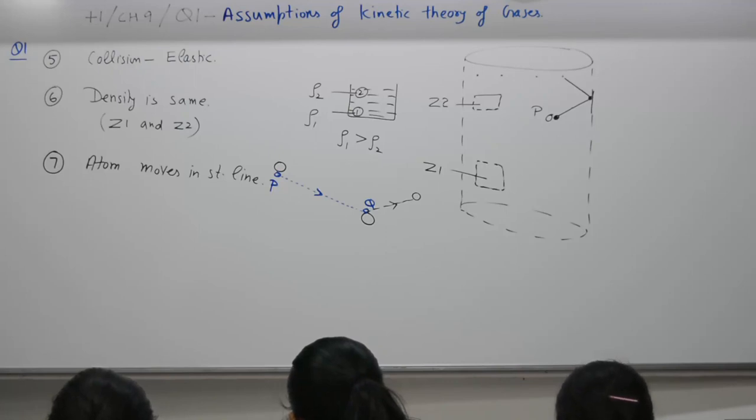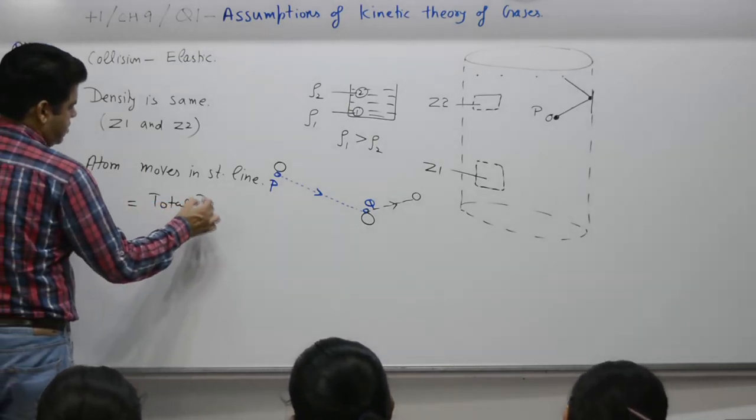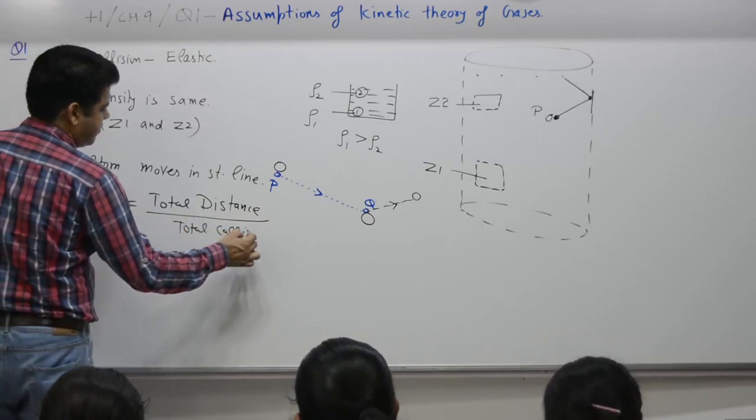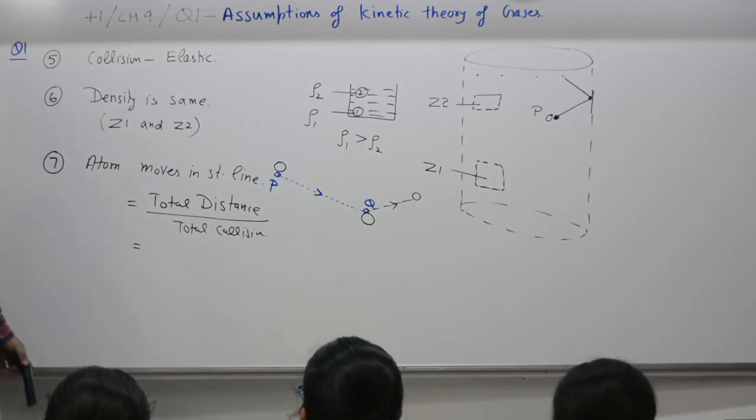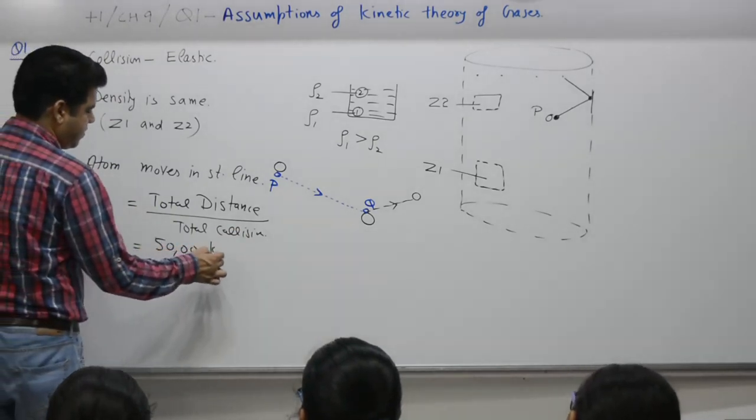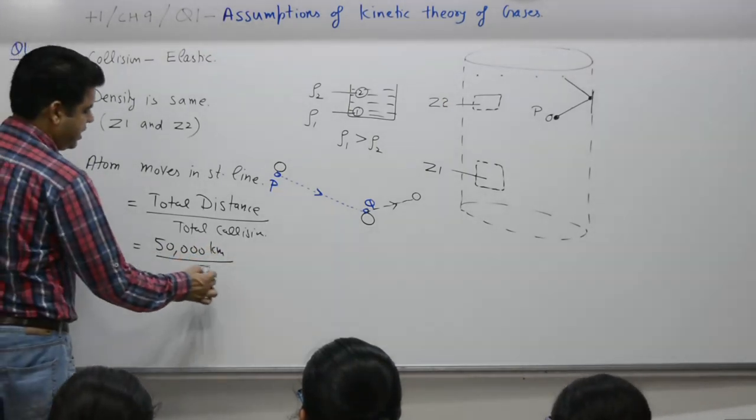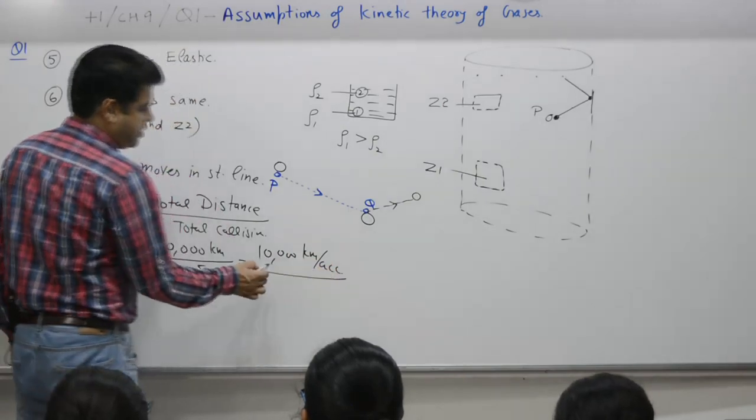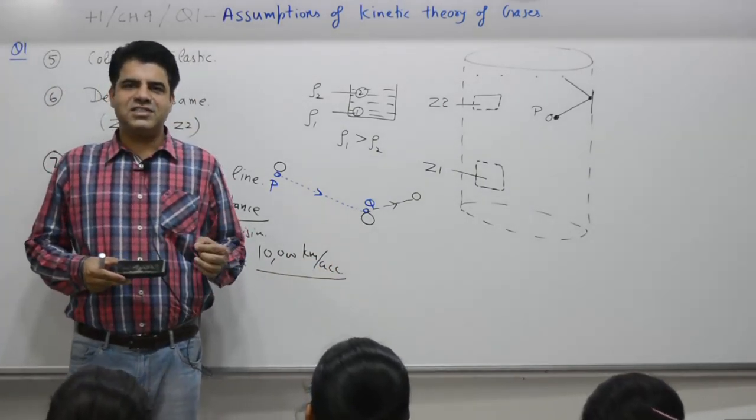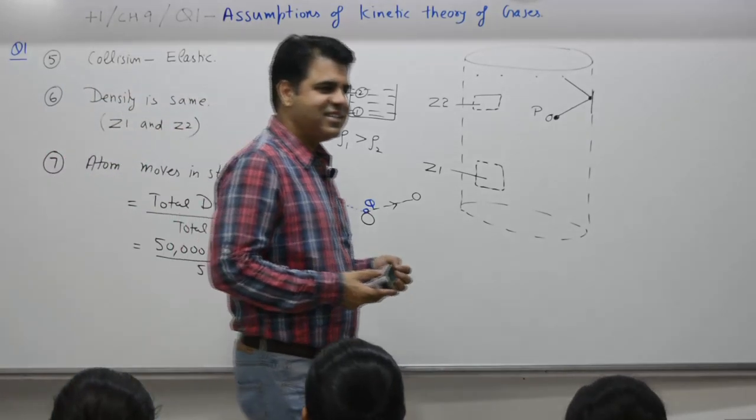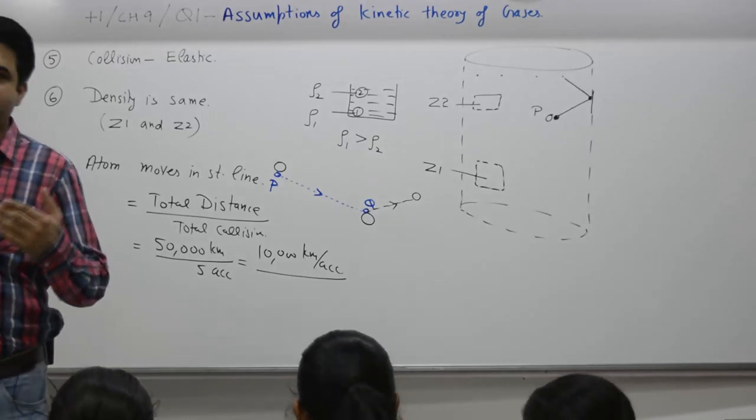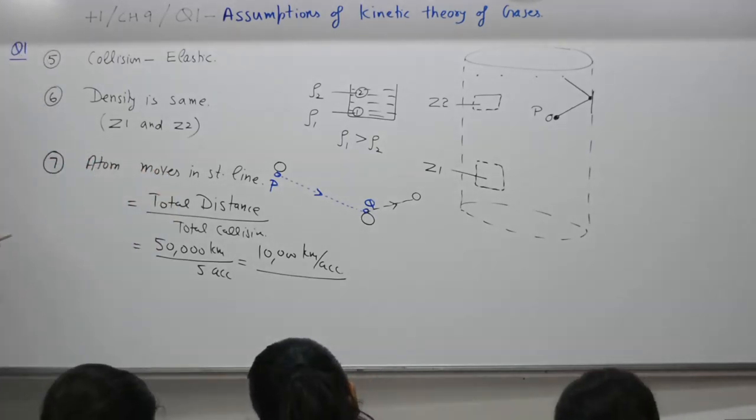After the collision it may change its direction, but in between two collisions it is same. And the average straight distance covered between two successive collisions is called mean free path. Total distance by total collisions, number of collisions. Example, a person has covered 50,000 kilometers. Total distance covered by a person is 50,000 kilometer and the number of accident is 5. So 10,000 kilometer is the average distance in between the two. When do you think is the next accident due? Yes, 50 plus 10, 60,000. So the person is likely to have one accident when one covers next 10,000 kilometers. This is what we mean by the term mean free path.